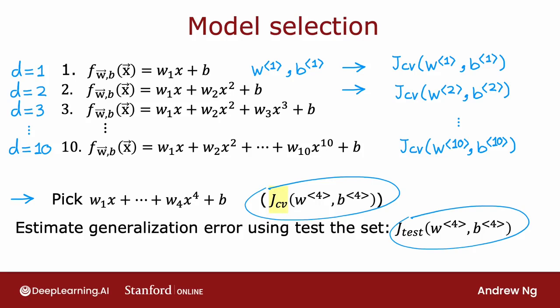That's why J test in this example will be a fair estimate of the generalization error of this model with parameters w4, b4. This gives a better procedure for model selection and lets you automatically make a decision like what order polynomial to choose for your linear regression model.